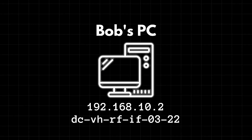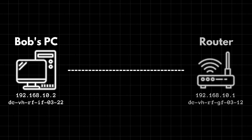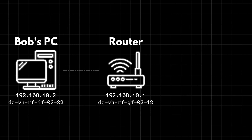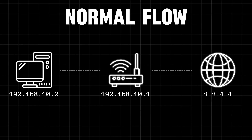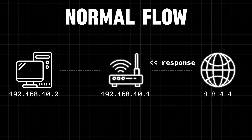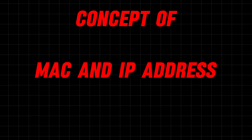Let's say this is Bob's PC, which has an IP and MAC address as shown. Bob is connected to his home network using his router, which has its own IP and MAC address. The router is then connected to the internet, meaning Bob has access to any website worldwide. In normal web browsing, when Bob wants to access google.com, his computer sends a request to his router as a packet. The router forwards it to the web server, which generates a response and sends it back to Bob's computer.